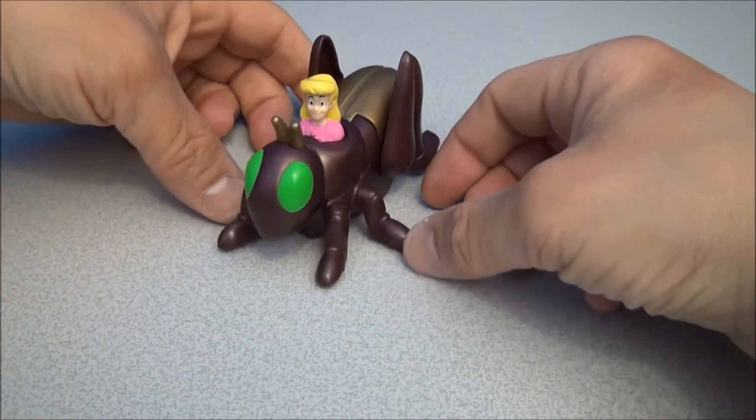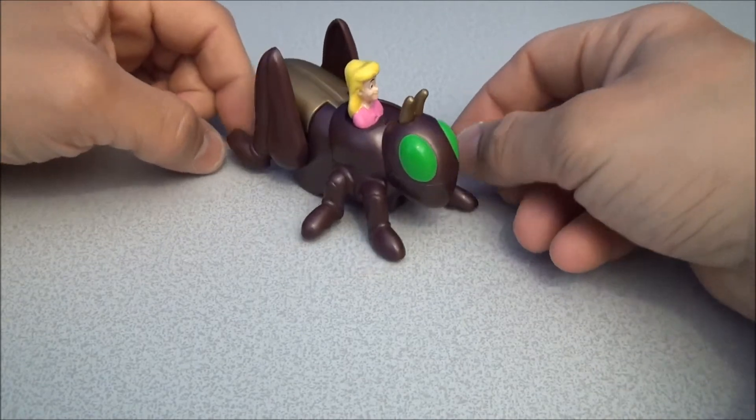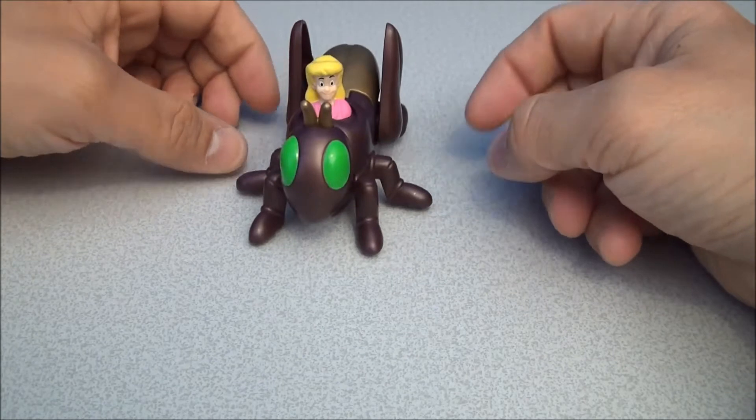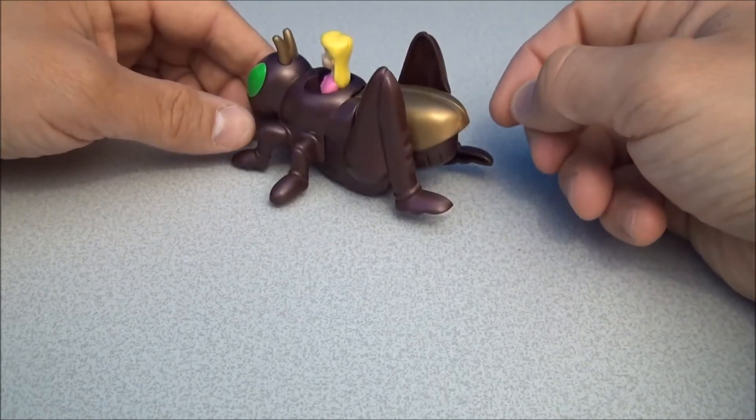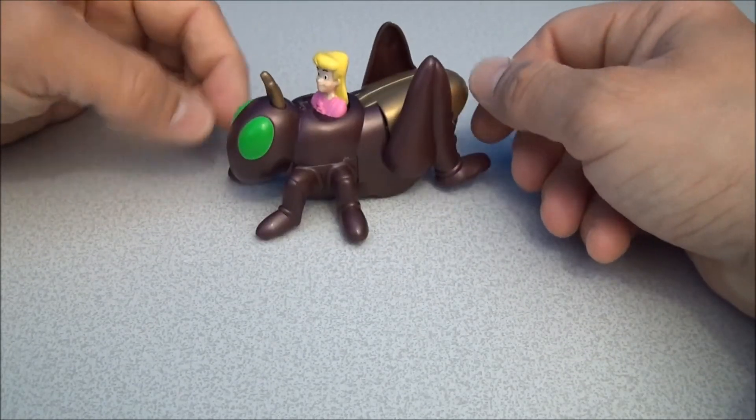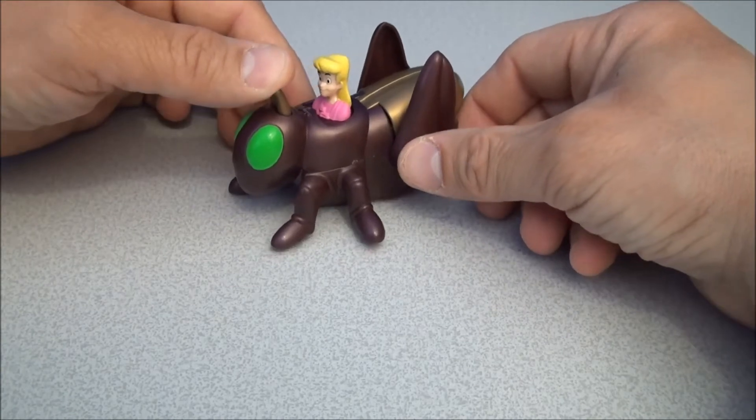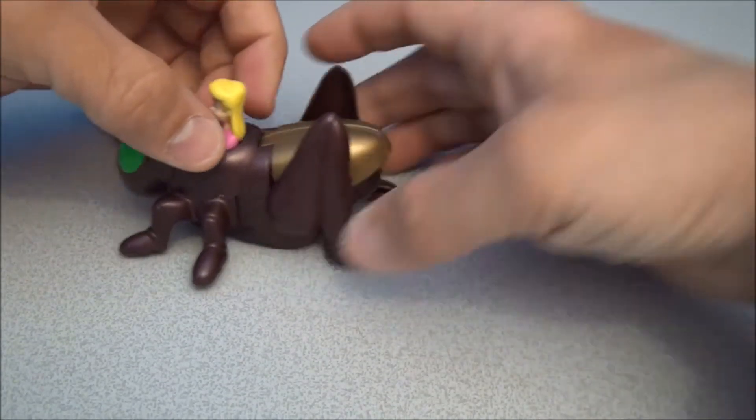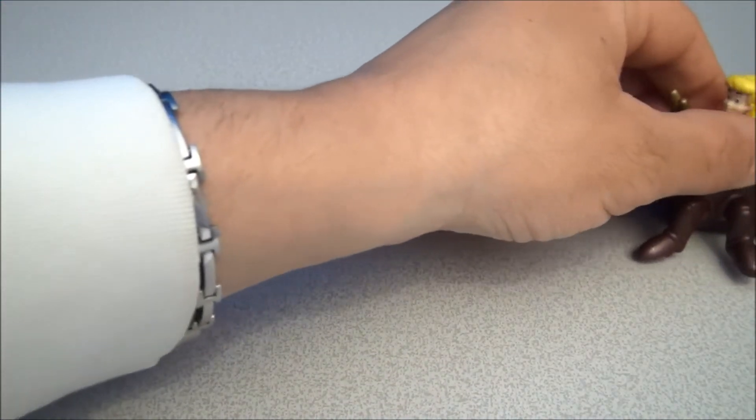Next we have Snaps and Snaps is a locust or a grasshopper, if you will, or a cricket. It's actually, I think, a cricket more so than anything. Something in that kind of a family, I guess. There's a little girl riding inside of Snaps. And what you do with Snaps is you just pull this back and you see the legs are getting wound up there. And it does that.